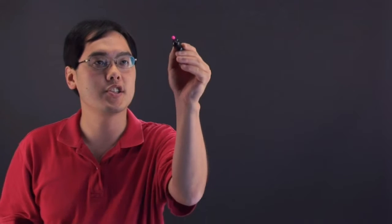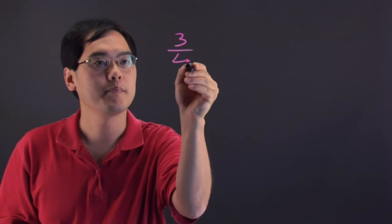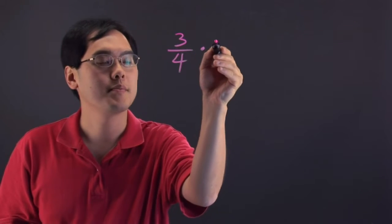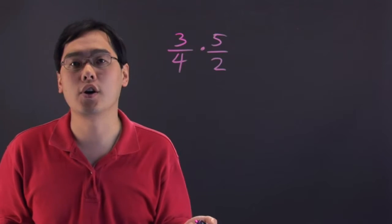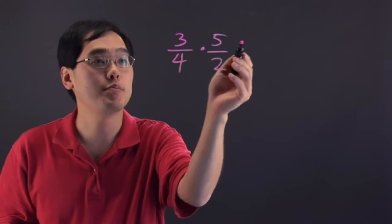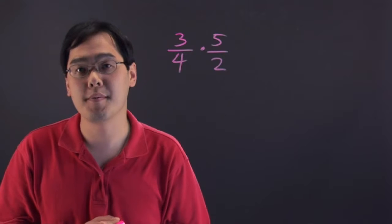When it comes to multiplying fractions, let's just say you have 3/4 times 5/2. With multiplying fractions, all you really have to do is multiply across the numerator and the denominator.